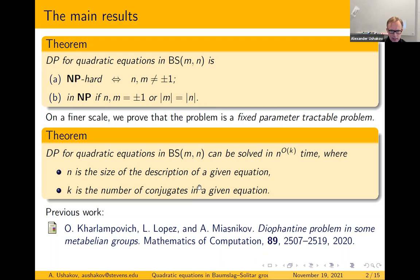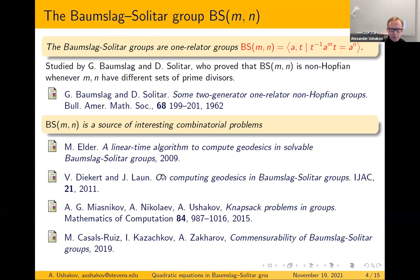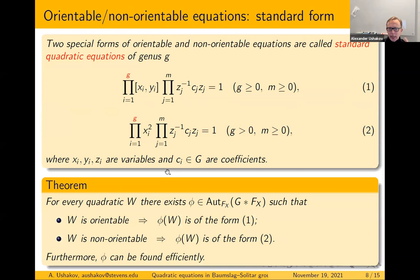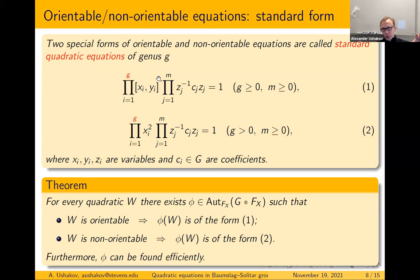Let me jump to the definition of standard quadratic equations. A standard quadratic equation is an equation of this form, where we have basically two parameters: we have genus g and this value m (which on the previous slide is called k). Our next result claims that if you bound this value m — if you consider only equations in which m is bounded — then you get polynomial time complexity for the Diophantine problem.